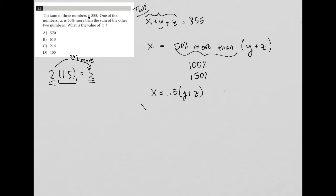What do I know? I'll rewrite it. I know that x plus y plus z equals 855. And I know that x equals 1.5 times (y plus z).